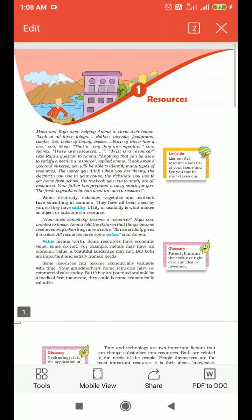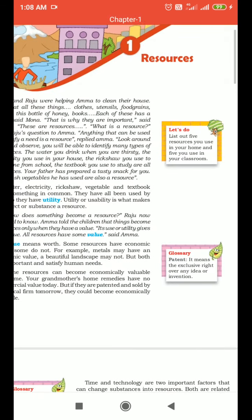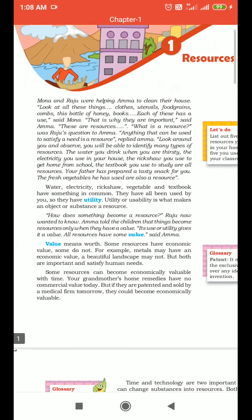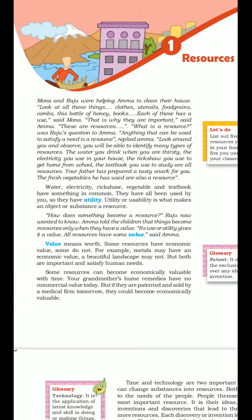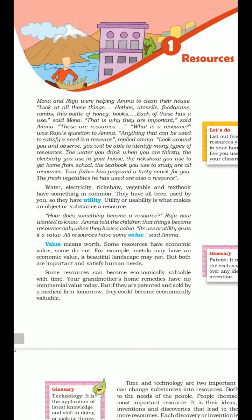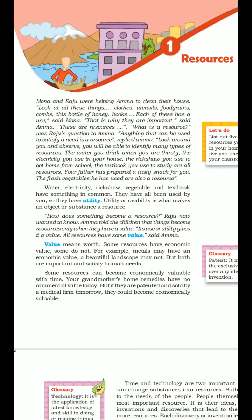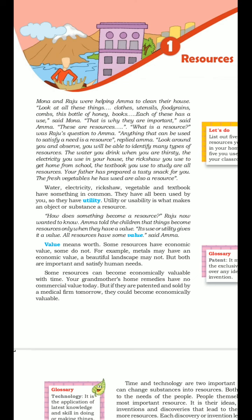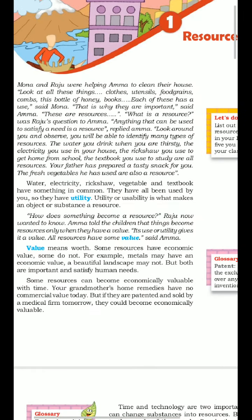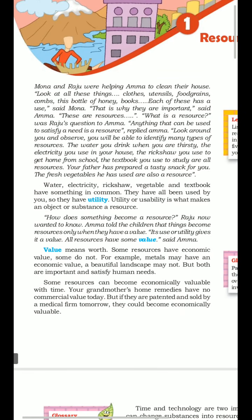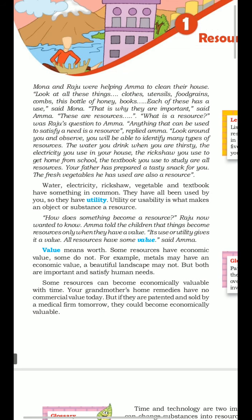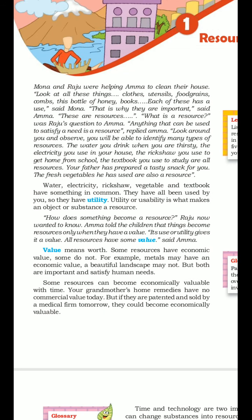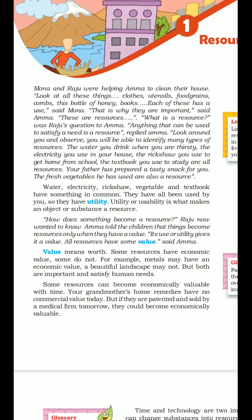This chapter concentrates on various resources. Just look around yourself — you will find many resources, like water you drink when you are thirsty is a resource. The textbook you use to read are all resources. Anything that can be used to satisfy a human need is a resource. Utility or usability is what makes an object or substance a resource.